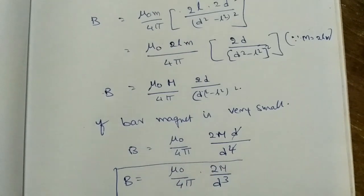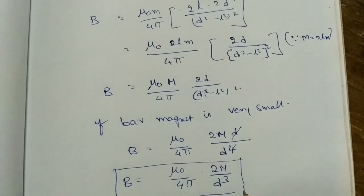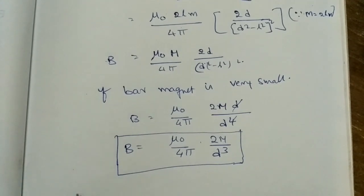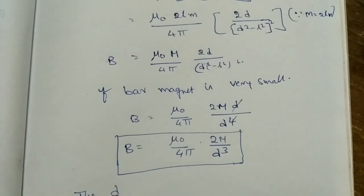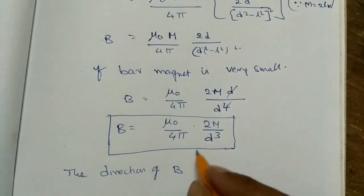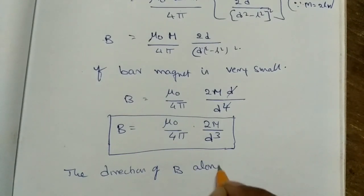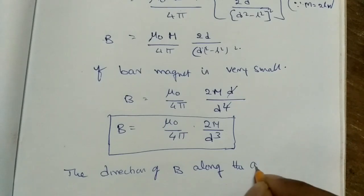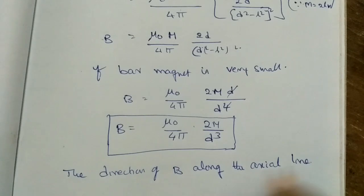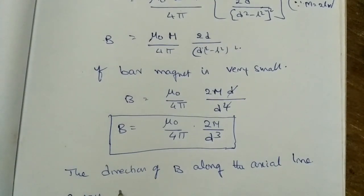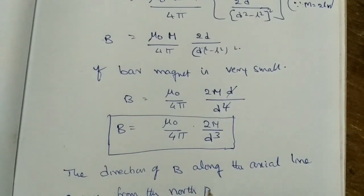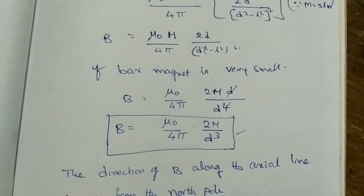The magnetic induction along the axial line is B = μ₀/4π × 2M/d³ for a short magnet. The direction of B along the axial line is away from the North Pole. This is a very important expression.